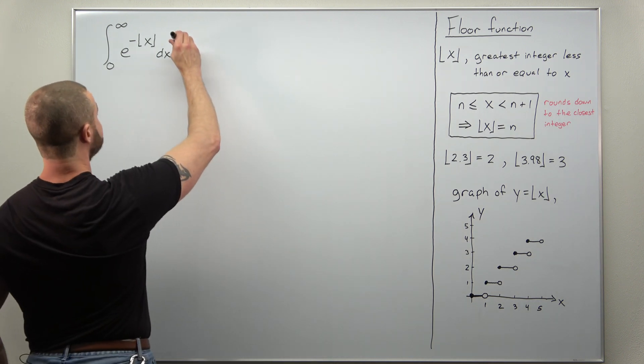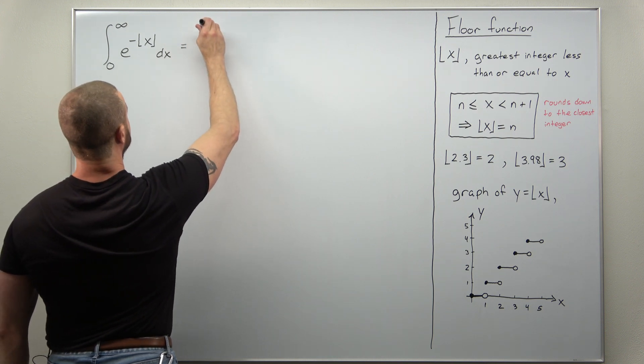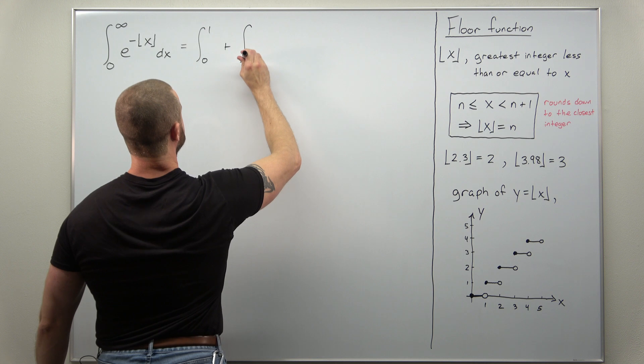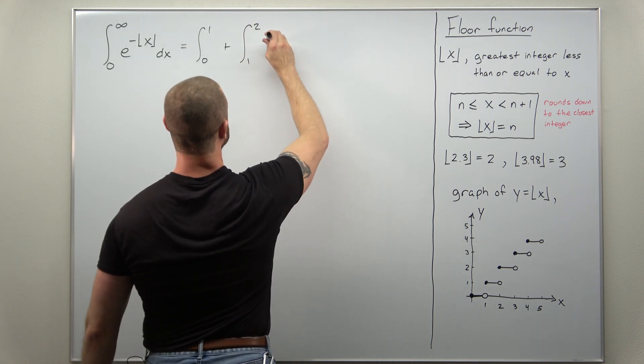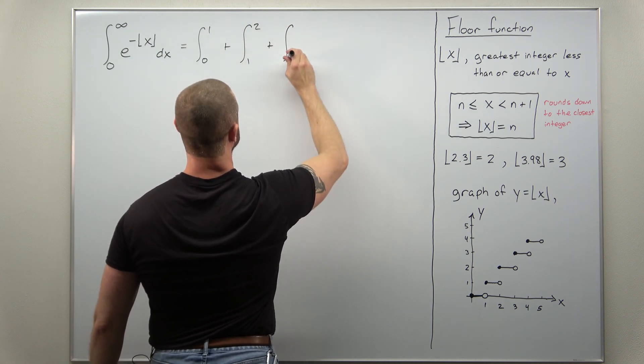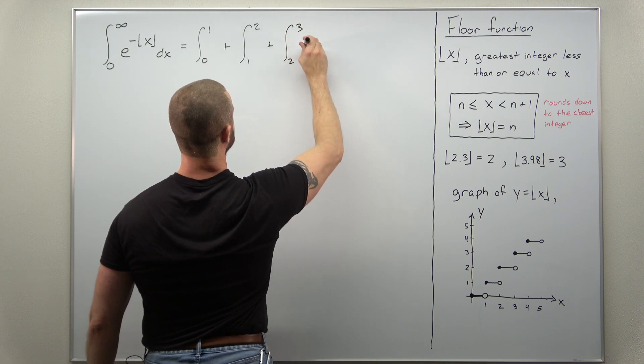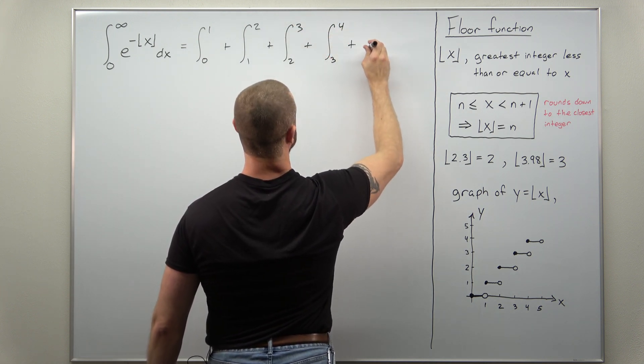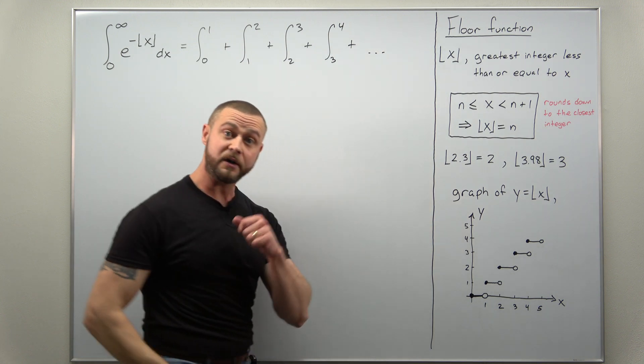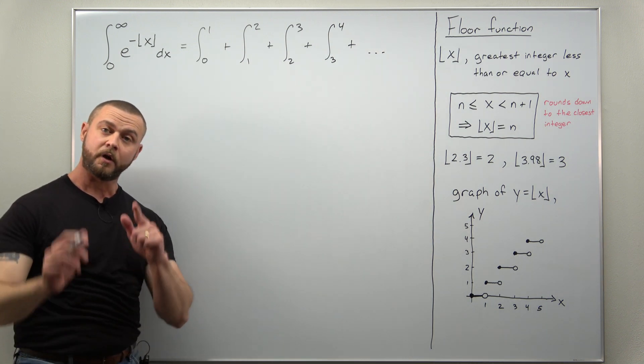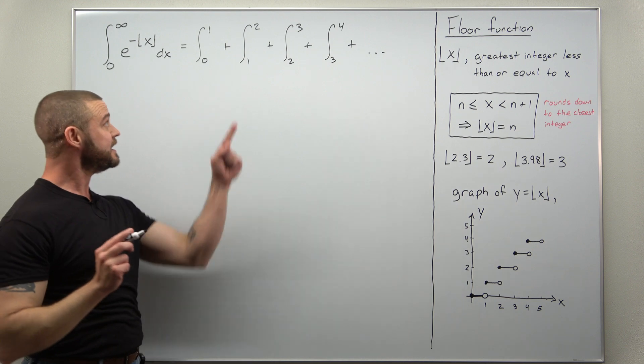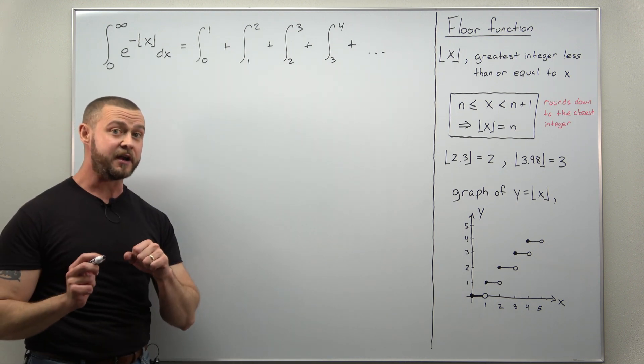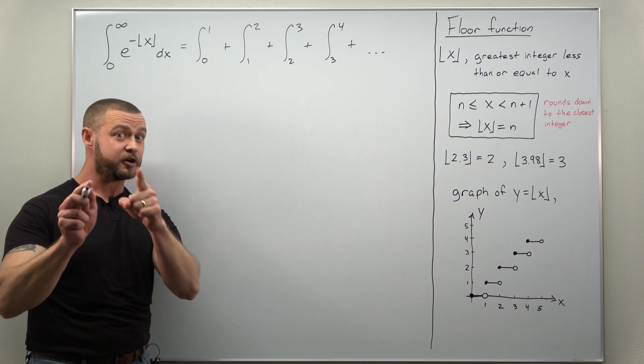So we're going to split this up as an integral from 0 to 1 and an integral from 1 to 2, another integral from 2 to 3, another integral from 3 to 4, so on and so on. This is giving us now an infinite sum of integrals where we're integrating over integer intervals.